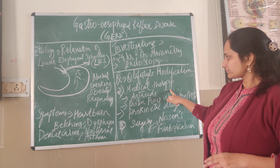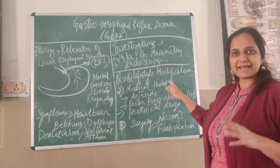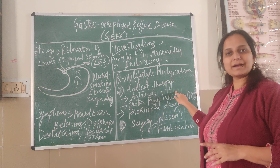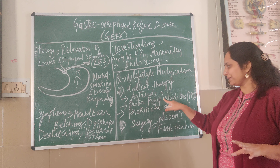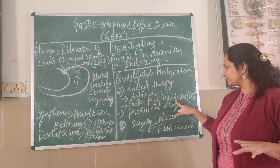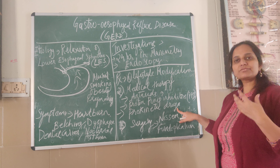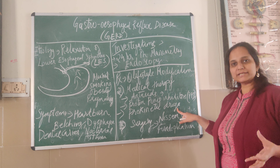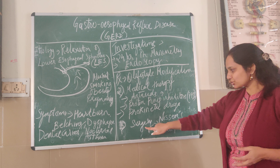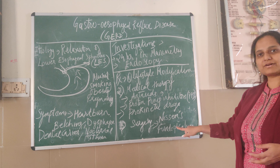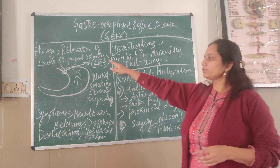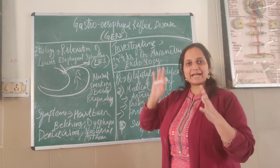For medical therapy, antacids provide only symptomatic relief by neutralizing acid. The main treatment is proton pump inhibitors, which decrease gastric acid secretion — the drug of choice is omeprazole. We can also give pro-kinetic drugs, which increase stomach motility, such as domperidone. The last option is surgery, which is Nissen's fundoplication, where we wrap the lower end of the esophagus.